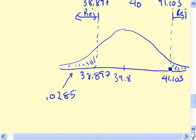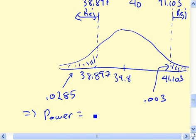Now, if we do something similar up here, again using Excel, it turns out to be pretty close to 0.003. So the power is the sum of those two numbers, so 0.0585. So that's not very big.